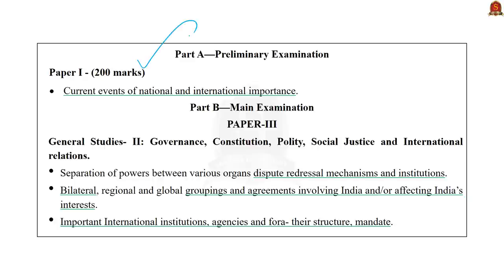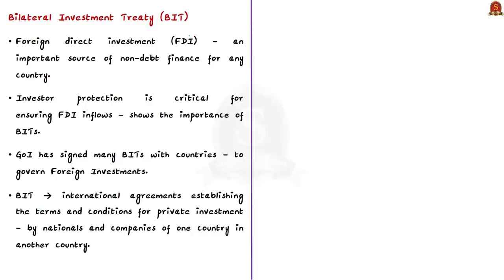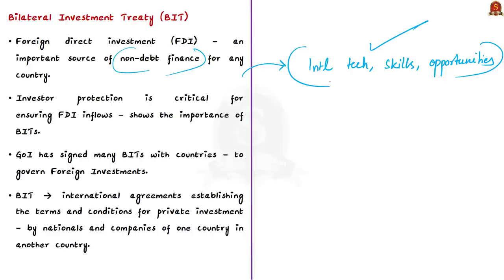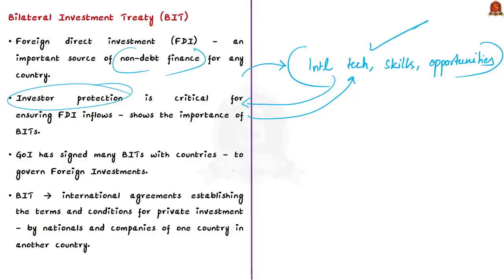Foreign direct investment is an important source of non-debt finance for any country, supplementing domestic investment and bringing internationally available technologies, managerial skills, practices, and new employment opportunities. However, FDI is a two-way street — the investor provides technologies and skills, while the country must provide investor protection: a stable political and legal environment, assurances against taking away investment value through legislative or administrative acts, and access to justice. Bilateral investment treaties between two countries play a key role in offering these guarantees on an international plane.